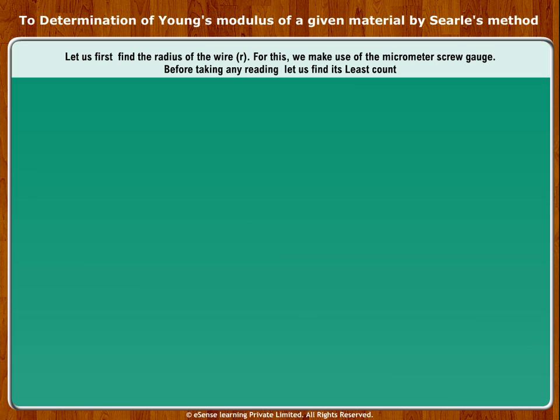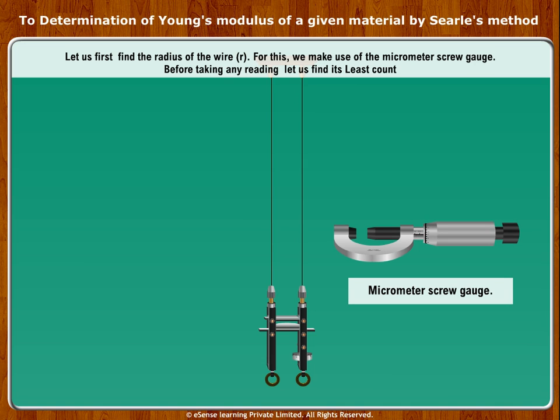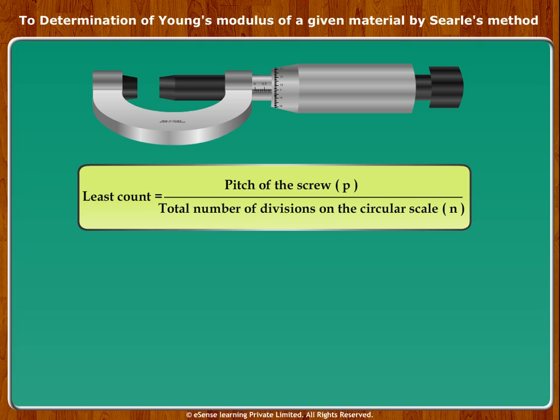Procedure: Let us first find the radius of the wire R. For this, we make use of the micrometer screw gauge. Before taking any reading, let us find its least count. It is defined as: Least count equals pitch of the screw P upon total number of divisions on the circular scale N.